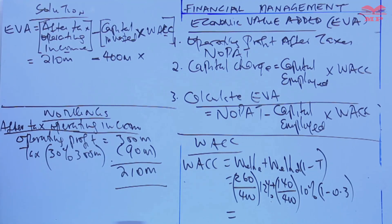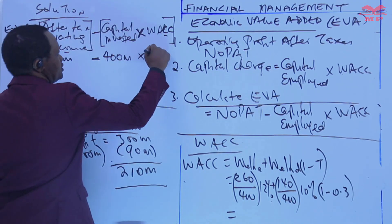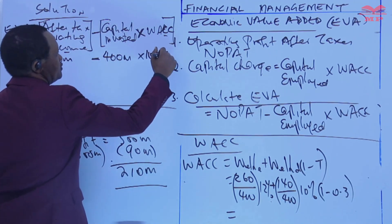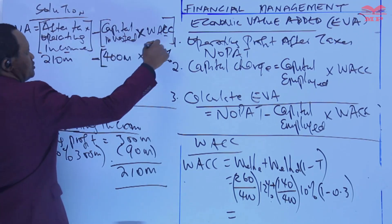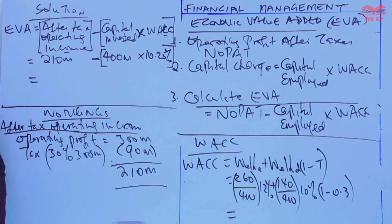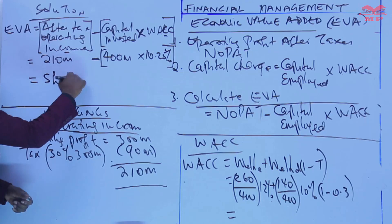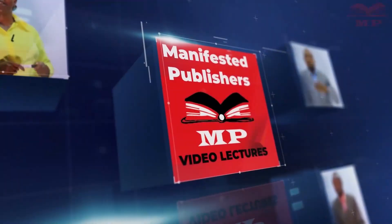The WACC works out to 10.25%. That gives us the EVA: after-tax operating income of 210 million minus capital employed of 400 million times WACC of 10.25% equals an EVA of 169 million.